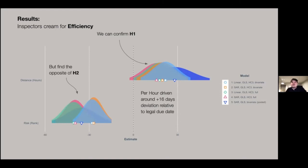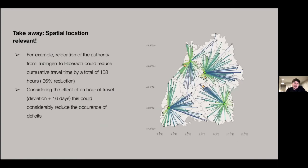What are the implications for that for us? Essentially we can take away that the spatial location of the authority matters a lot. When implementers tend to cream for efficiency, they go for the locations that are closest to them. One way of solving the problem is putting the inspector closer to the locations. We tried to find the most optimal location here.